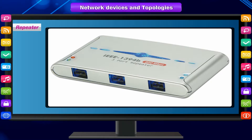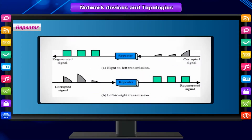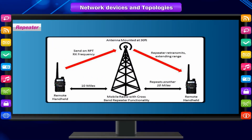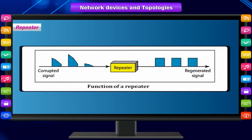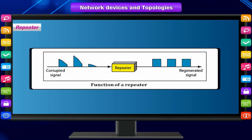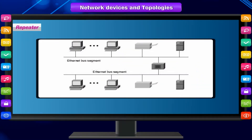A repeater is an electronic device that receives a signal and retransmits it at a higher level or power so the signal can cover longer distances. It connects two segments of your network cable, retimes and regenerates signals to proper amplitudes, and sends them to the other segments. Ethernet topology uses a hub as a repeater.